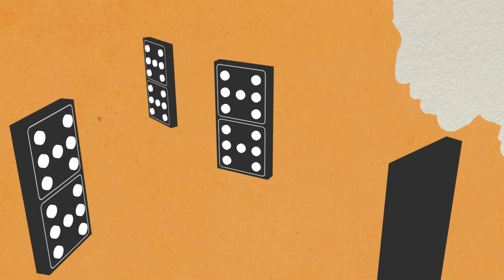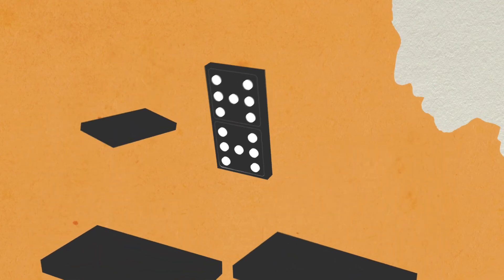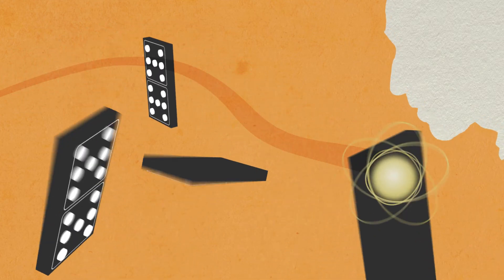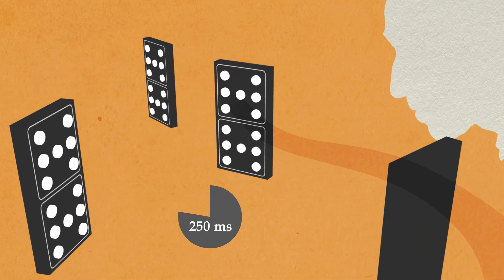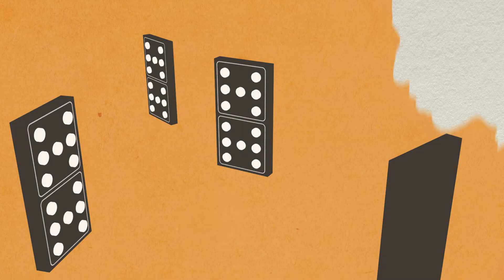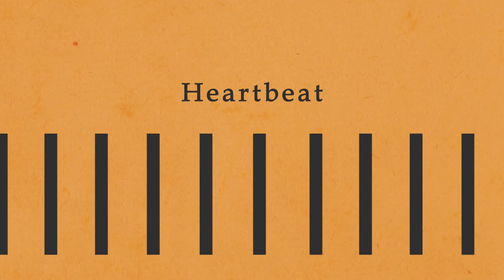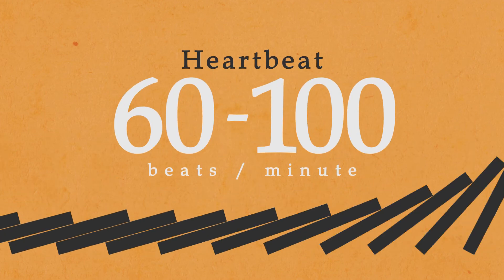Everyone knows that once dominoes have fallen, it takes some time to set them up again. Similarly, it takes time for the next action potential to occur, because the refractory period prevents them from making the journey. This period lasts for 250 milliseconds at the resting heart rate. Repeat this cycle again and again, and what do we have? Heartbeat, with a rate of 60 to 100 beats per minute.